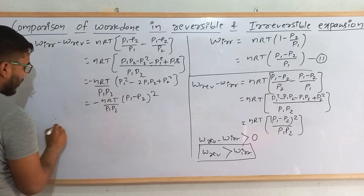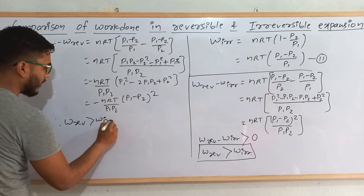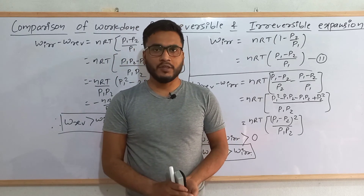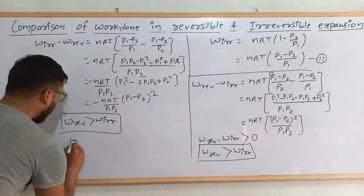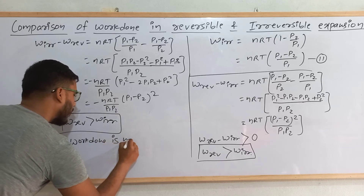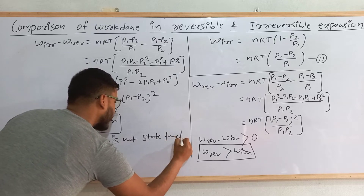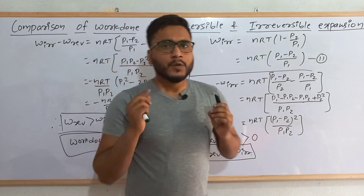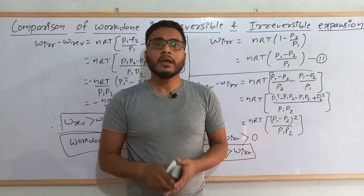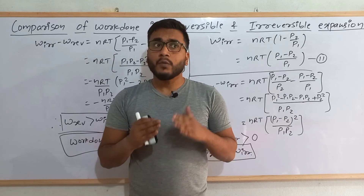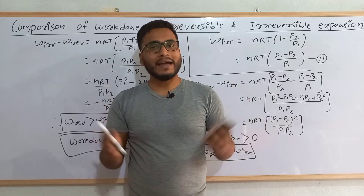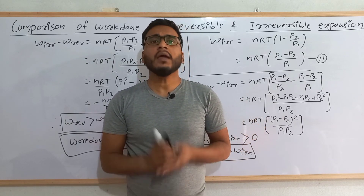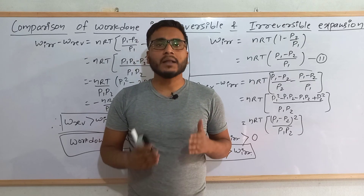By this method also, W_reversible is greater than W_irreversible. So by any method we can prove that work done in reversible process is always greater than work done in irreversible process. And this proves that work done is not a state function — because all variables that do not depend on the path are called state functions. Here, work done depends on the path: if it happens in a reversible process the value is greater, if irreversible it is lesser. That's why work done is a path-dependent variable.